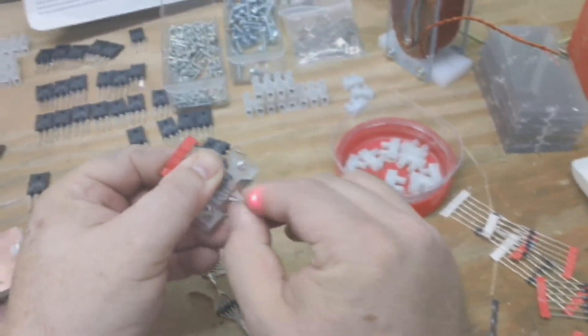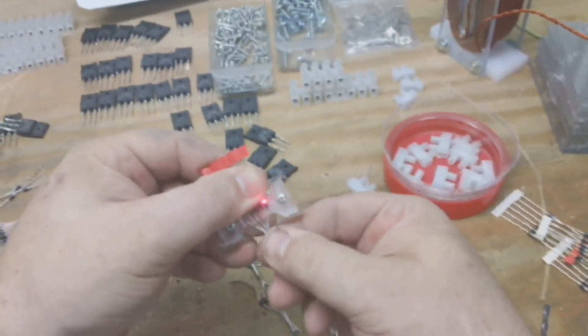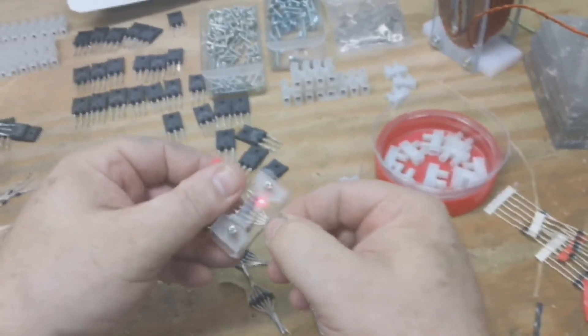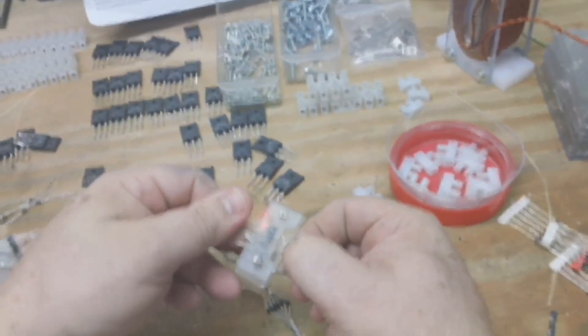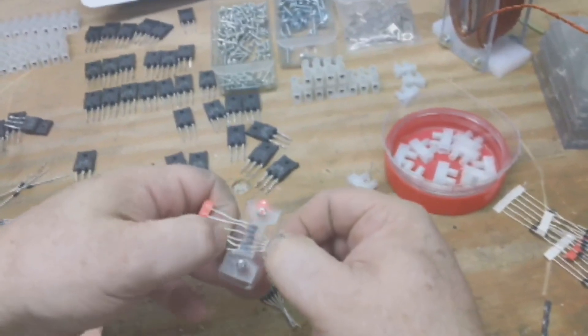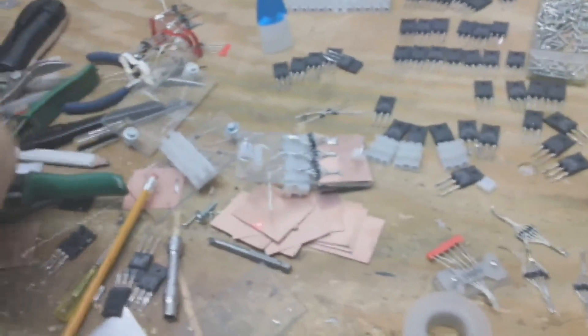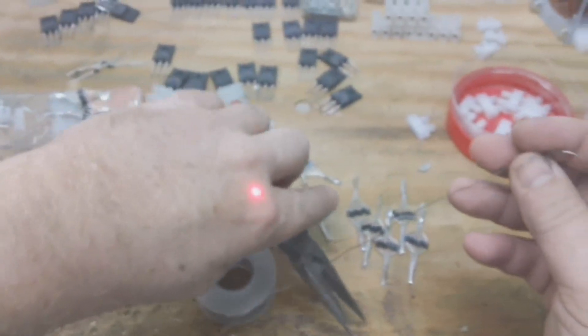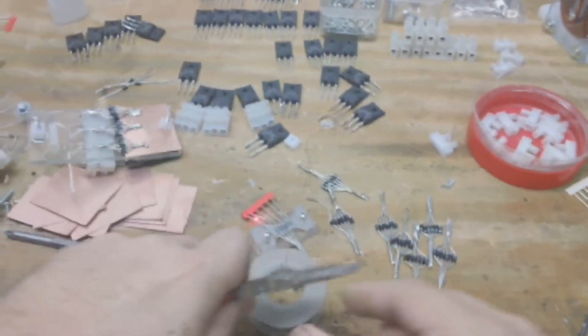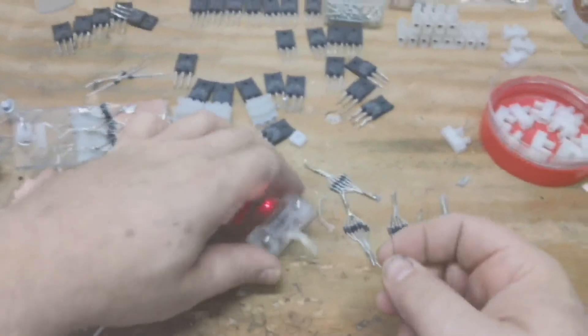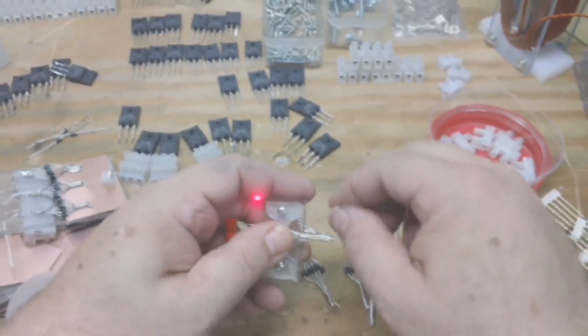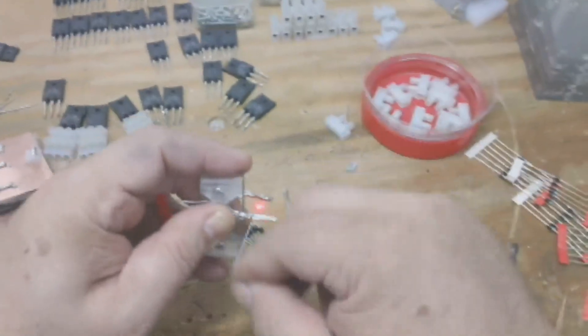And then what you do is you're going to put those together. You're not going to twist them because you don't want it to be larger than the size of the diode. You want it to lay flat, so you just squeeze them together like that. And then what I've been doing is taking a small piece of solder like this, holding it here and just twisting it like this.